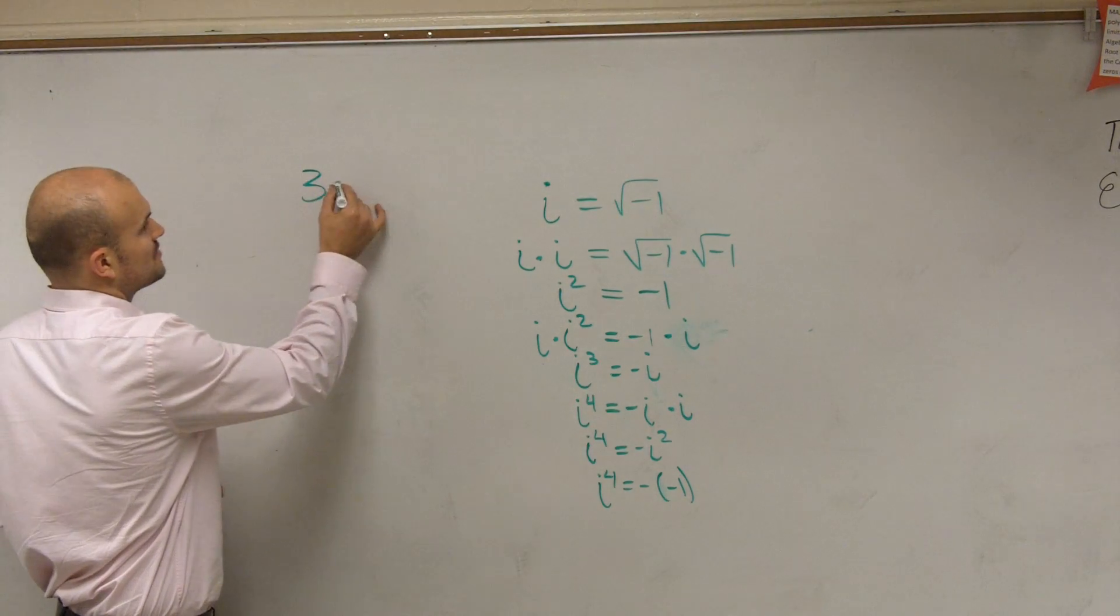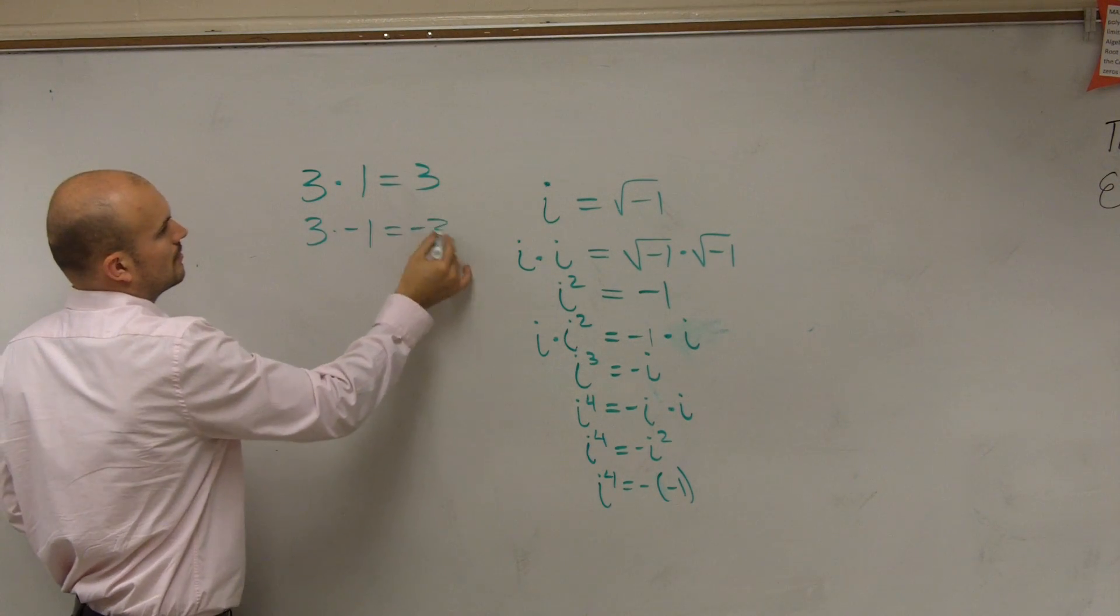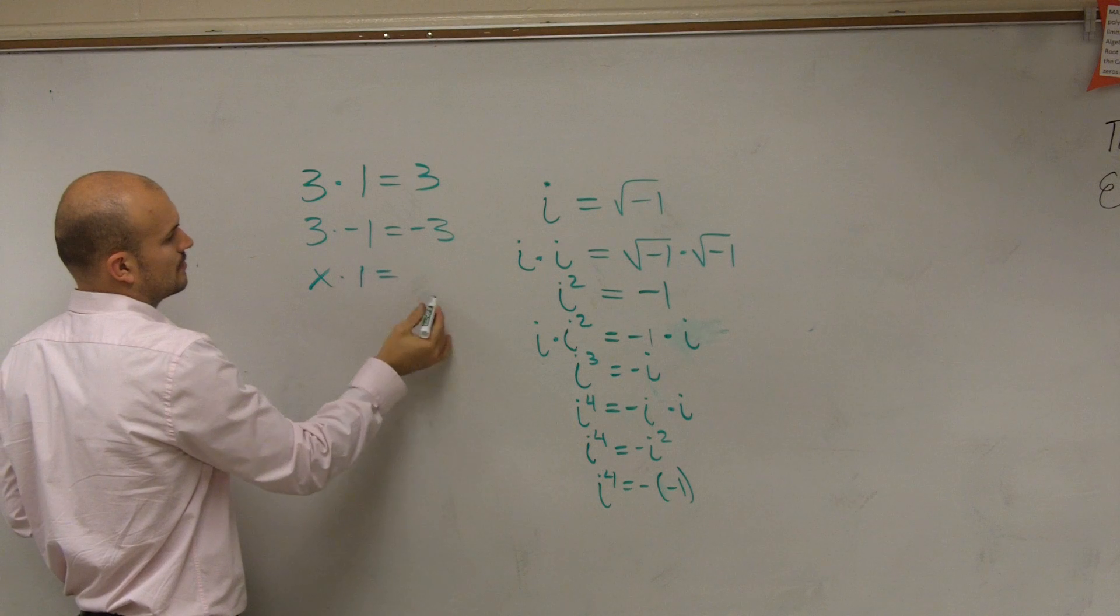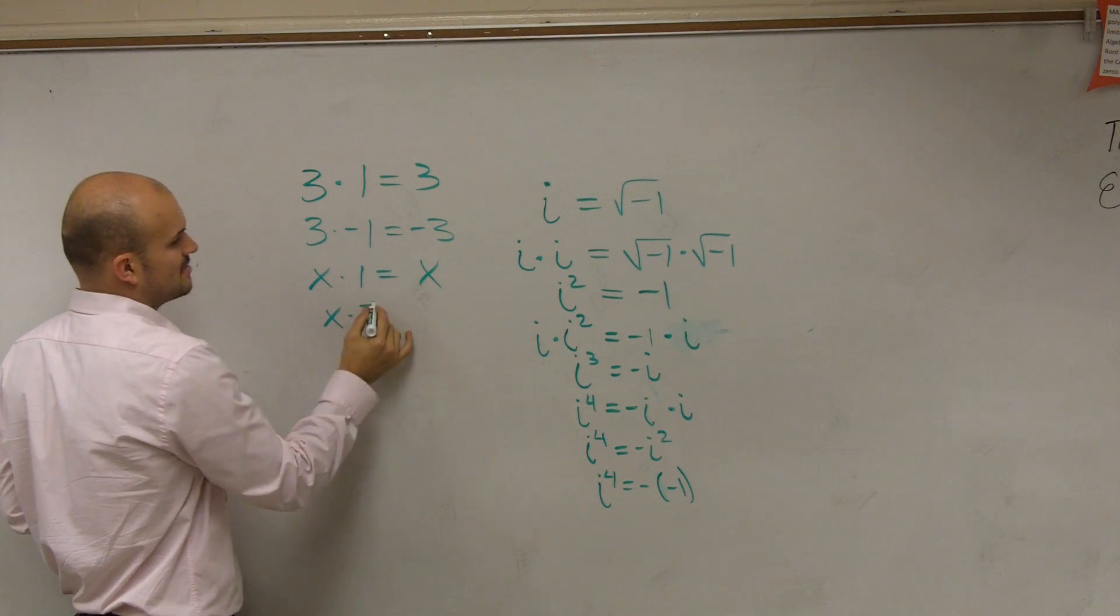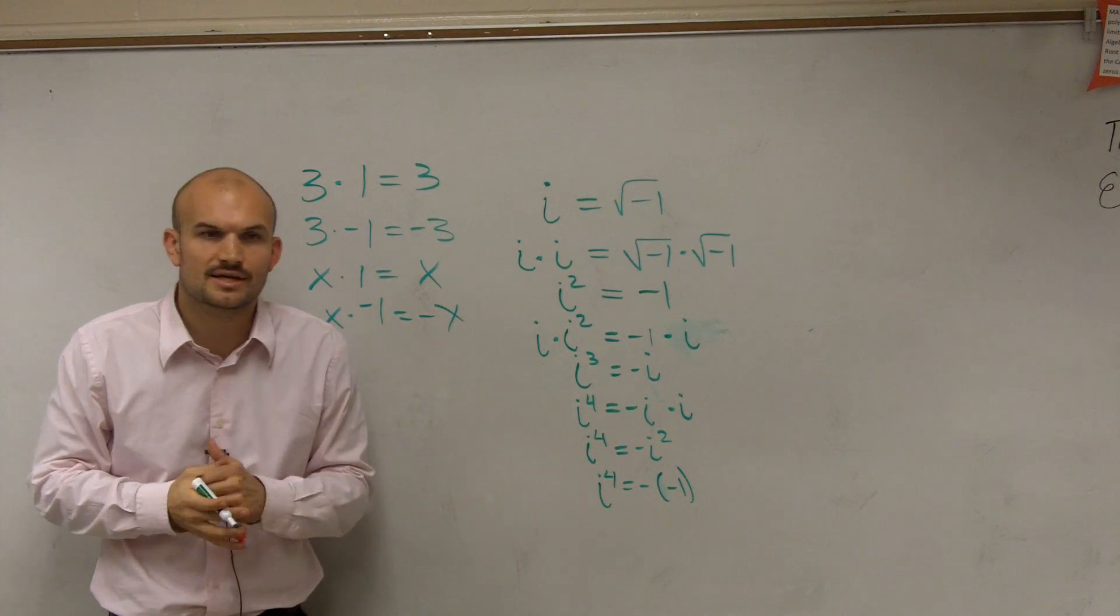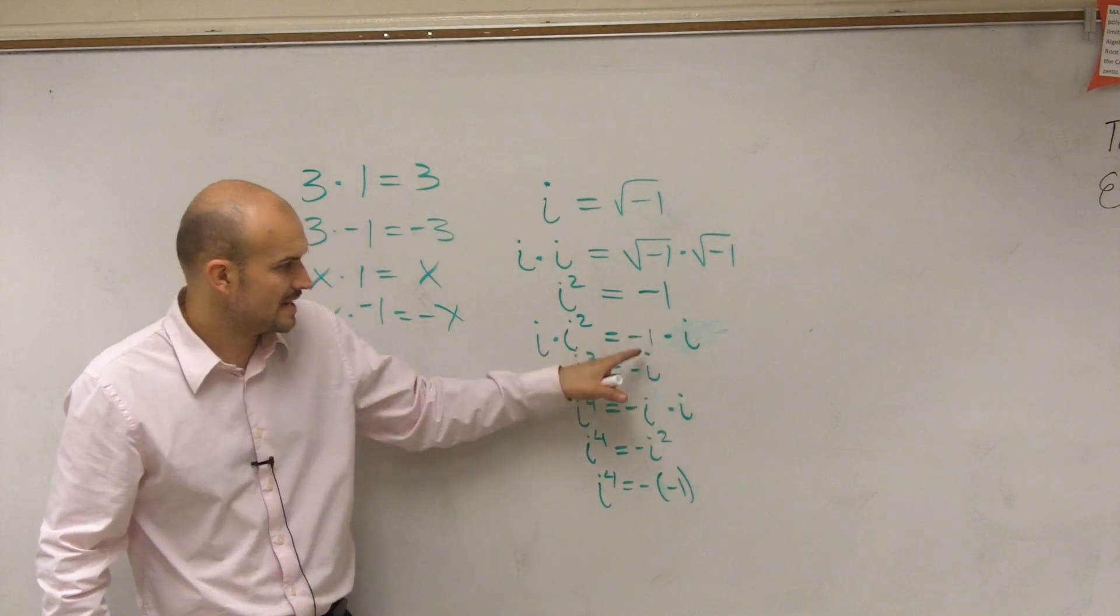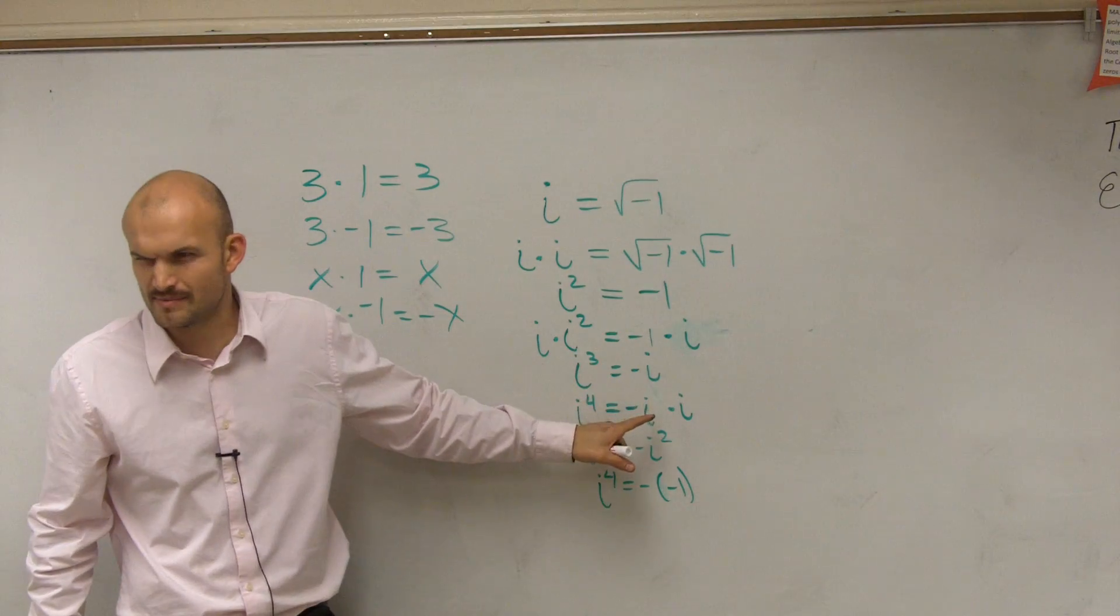What's 3 times 1? What's 3 times negative 1? What's x times 1? x. What's x times negative 1? Negative x. So treat i just like it would be like a variable or even a number. So i times negative 1 is negative i. Does that make sense?